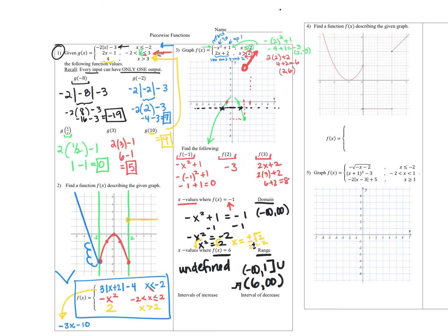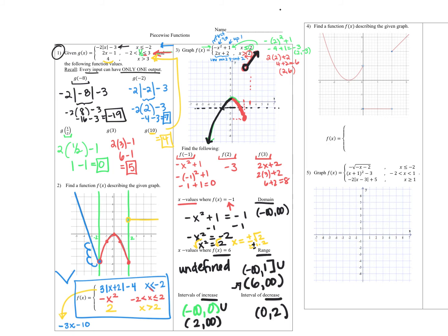For intervals of increase: the function increases from negative infinity to zero on the parabola, then jumps back up and keeps increasing from two to infinity. For decrease: that section from zero to two where the parabola goes downward. When noting increase and decrease we use only parentheses by convention, since you're not increasing or decreasing at a single point — you need to observe y-values getting bigger as you travel along.